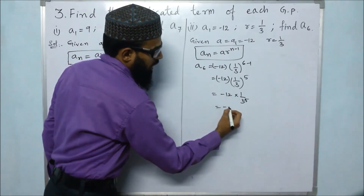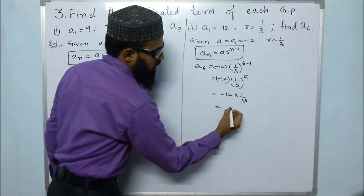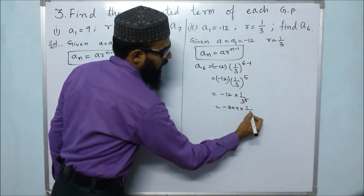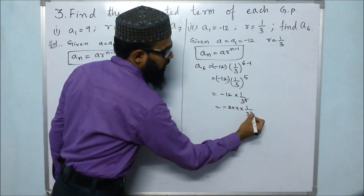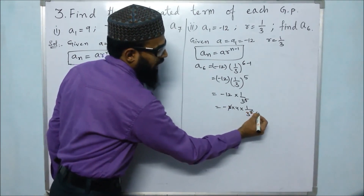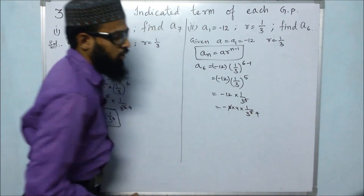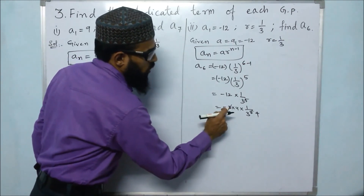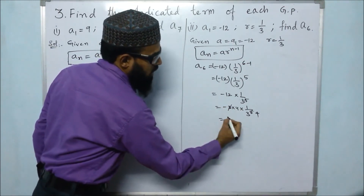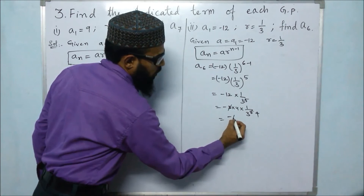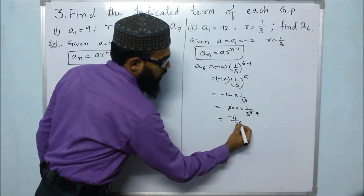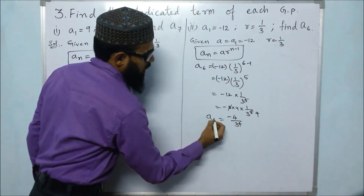We can write minus 12 as minus 3 times 4, multiplied by 1 by 3 to the power of 5. One factor of 3 cancels, leaving 3 to the power of 4 in the denominator. So the sixth term a6 equals minus 4 by 3 to the power of 4.